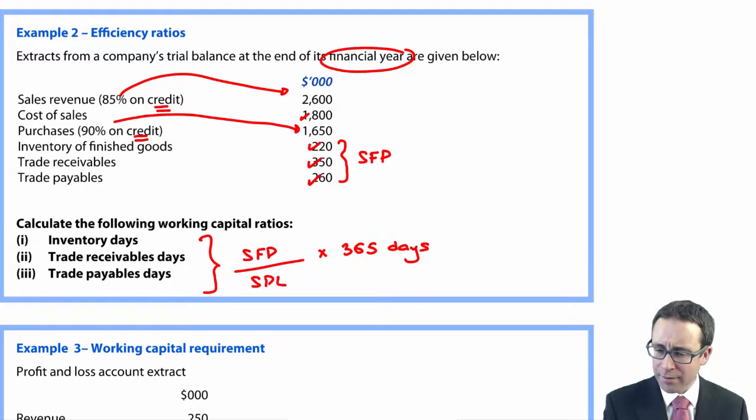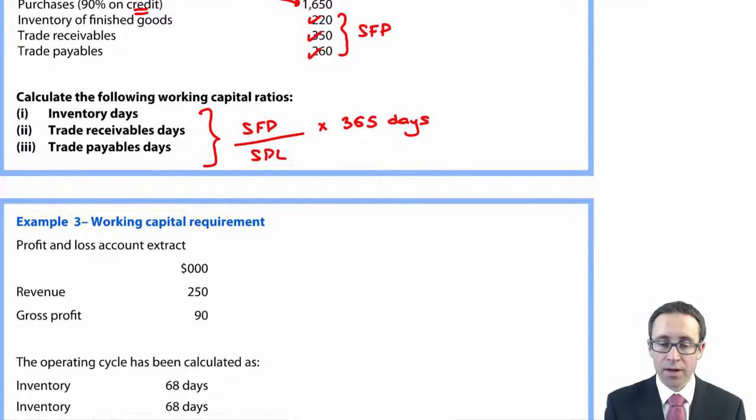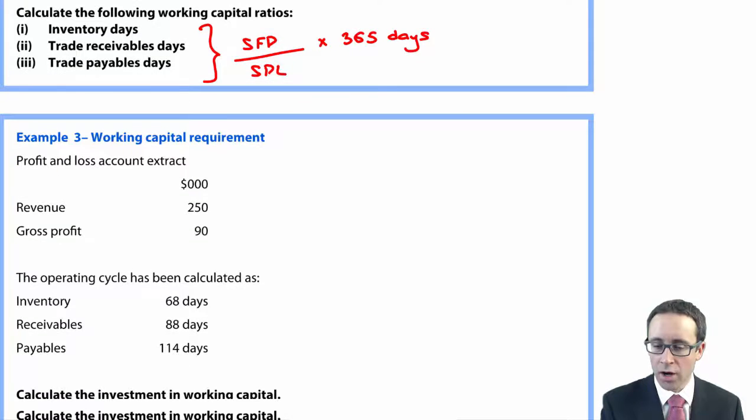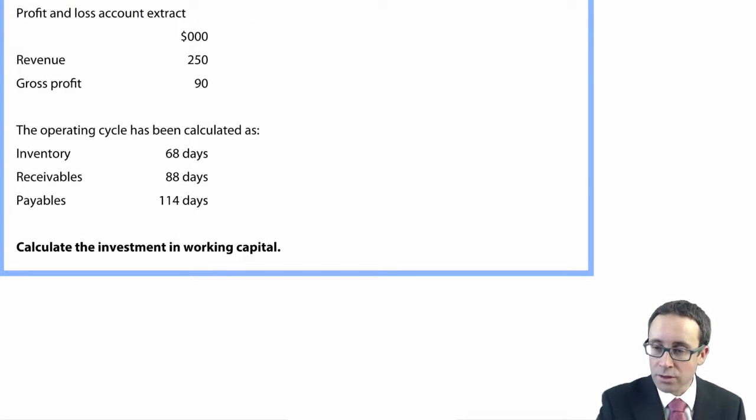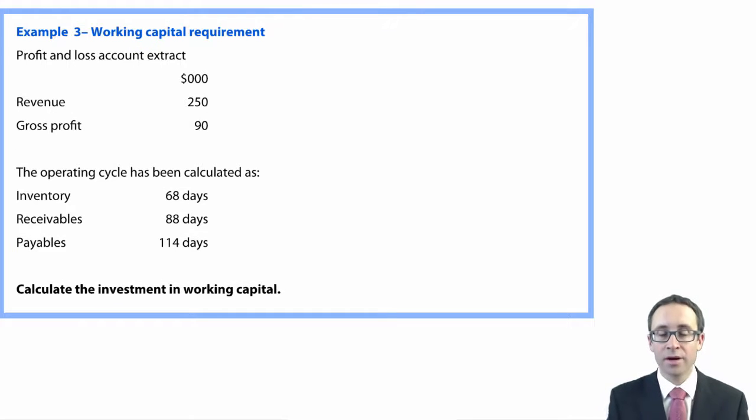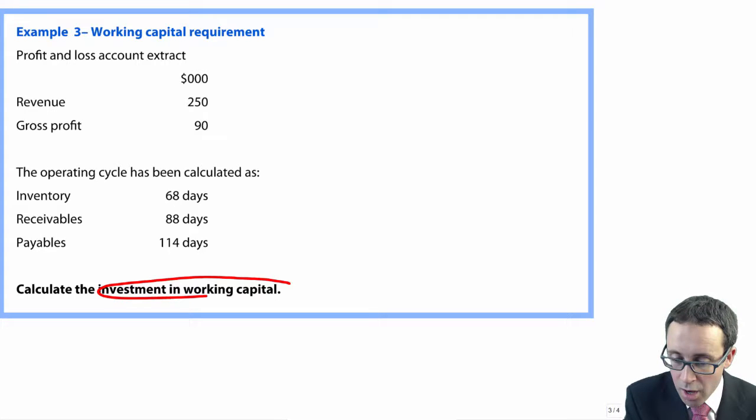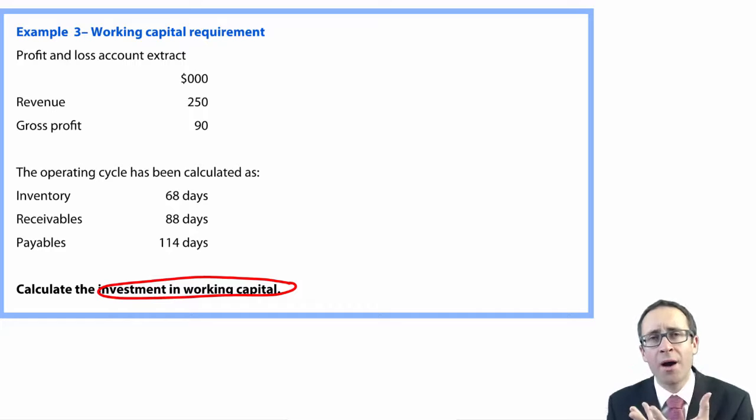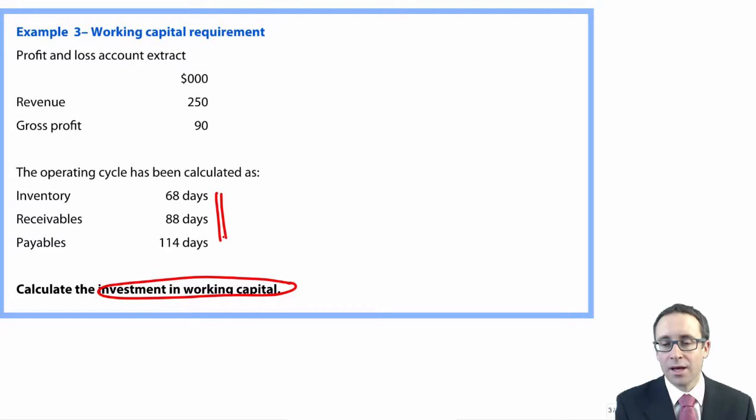What you may have to do instead of working out the number of days and the working capital cycle, you may actually have to look at the physical amount of working capital that you require within the business. So the question, instead of asking you to work out the number of days, is asking you to work out the investment in the working capital - how much in raw dollar terms should you have of working capital in regards to inventory, receivables, and payables.